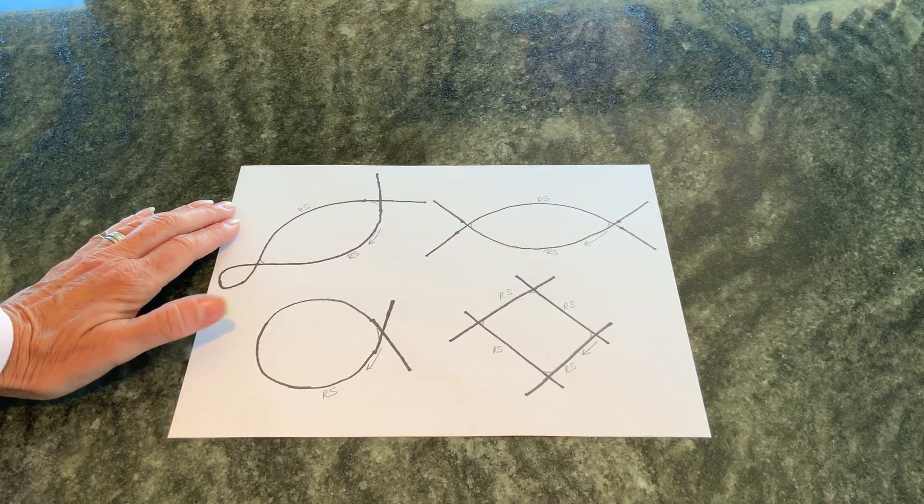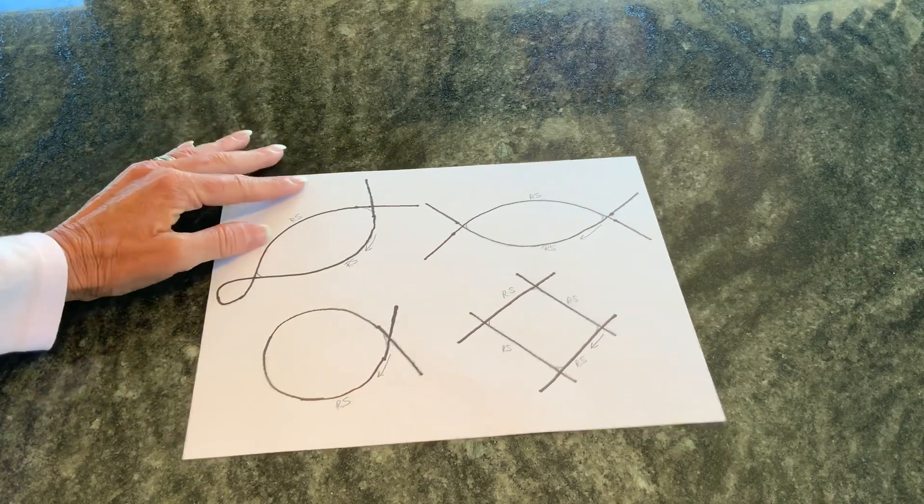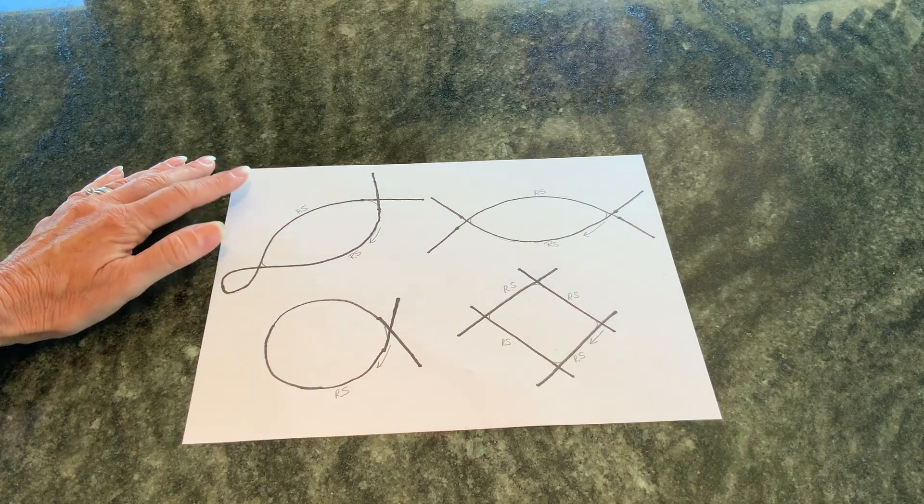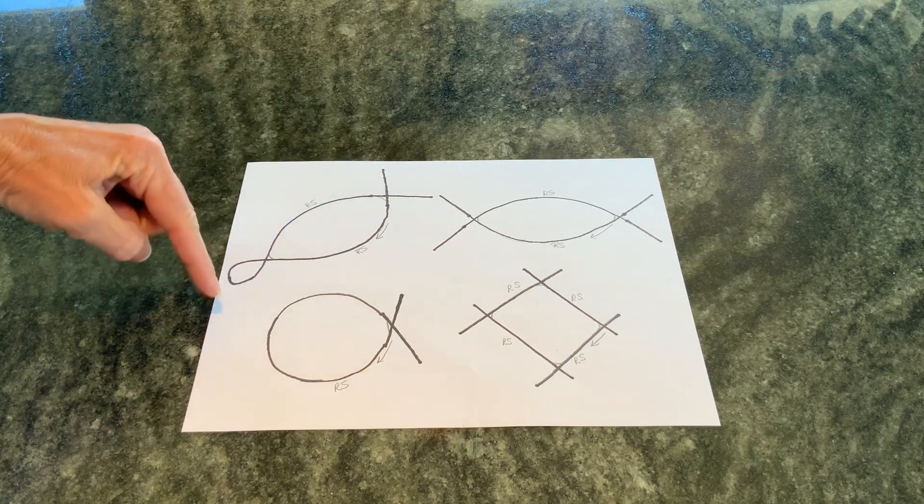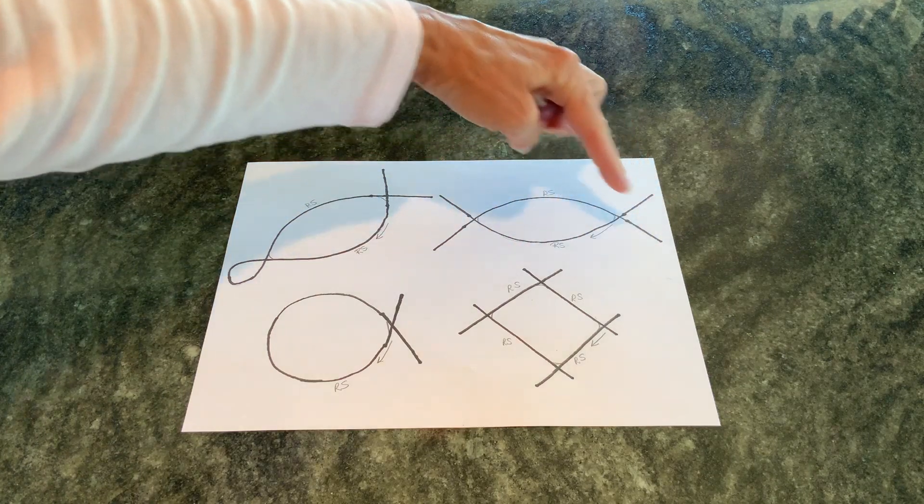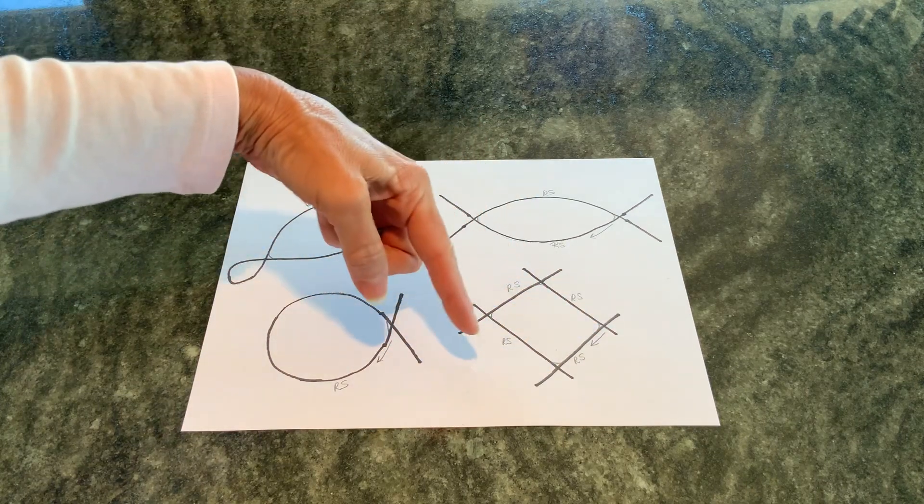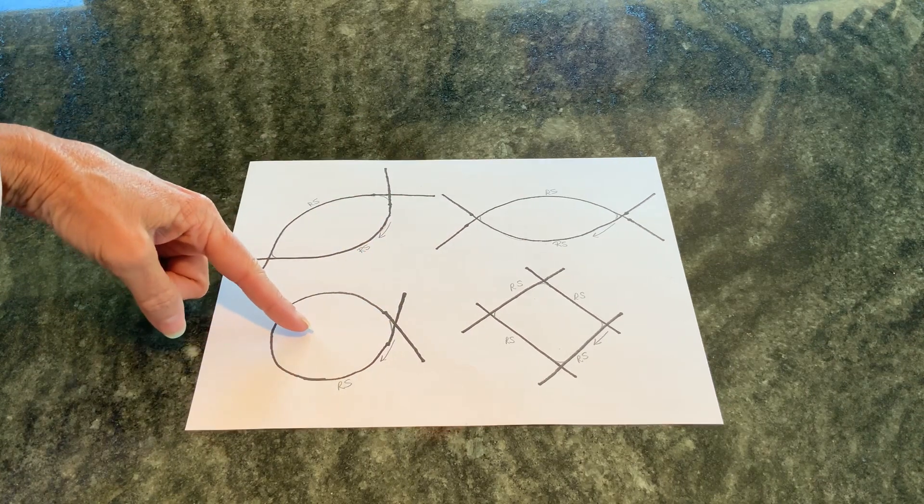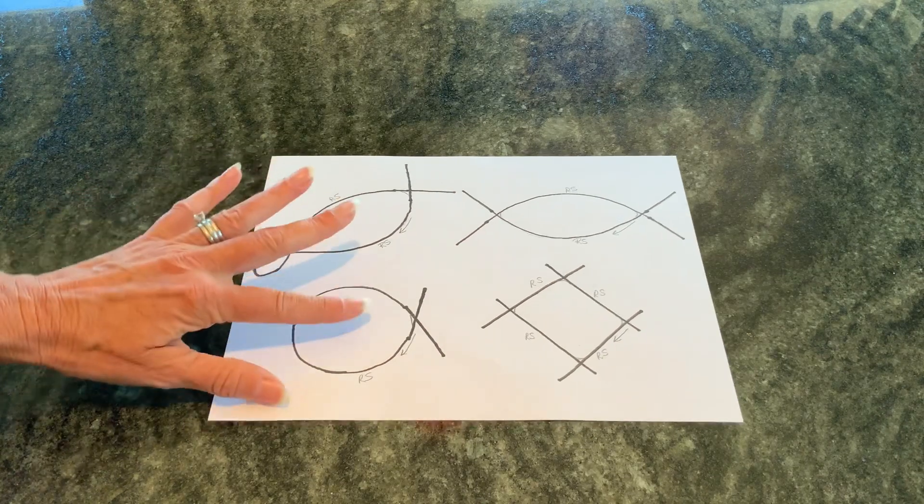This diagram is a representation of four different techniques that are generally used for small circumference knitting. This would be a magic loop where we have one long double-pointed needle. This is the two circular needle method for doing small circumference, and here's four DPNs. It's very common to use as well. And then we have the short circular needle, which are about nine inches long.